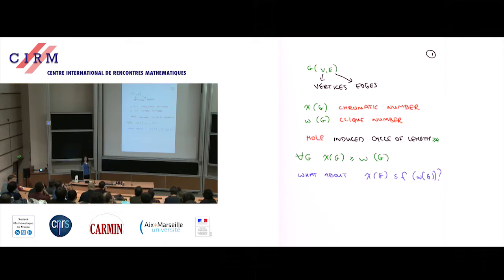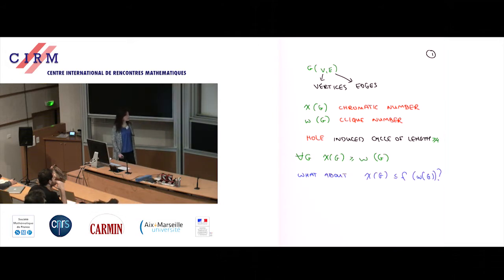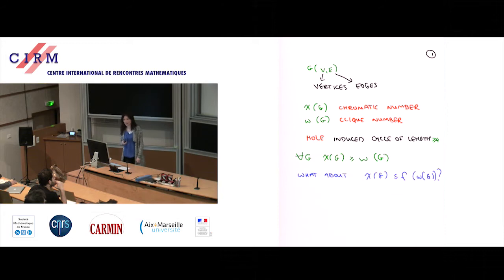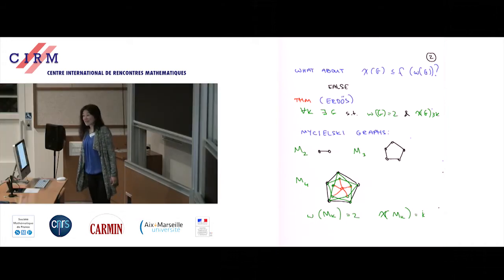We start with a graph — vertices and edges — and there are two parameters we're interested in. One is the chromatic number, another is the clique number. It's always true that the chromatic number is at least the clique number. The question is: what can you say the other way around? Can you say something like the chromatic number is at most some function of the clique number? Well, the answer is no, and there are many different reasons why.